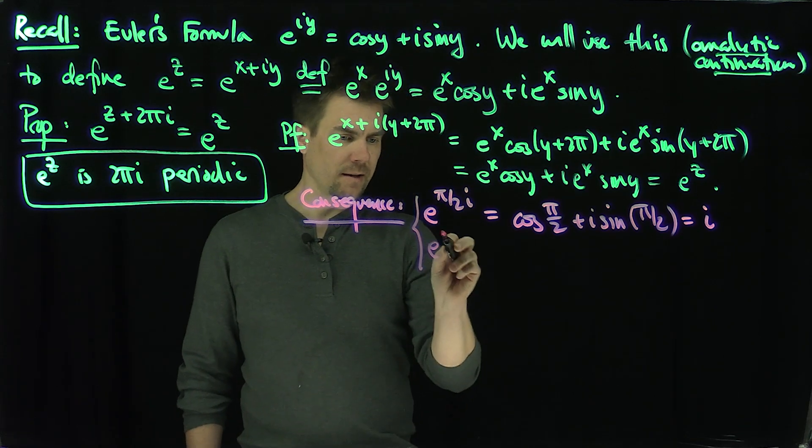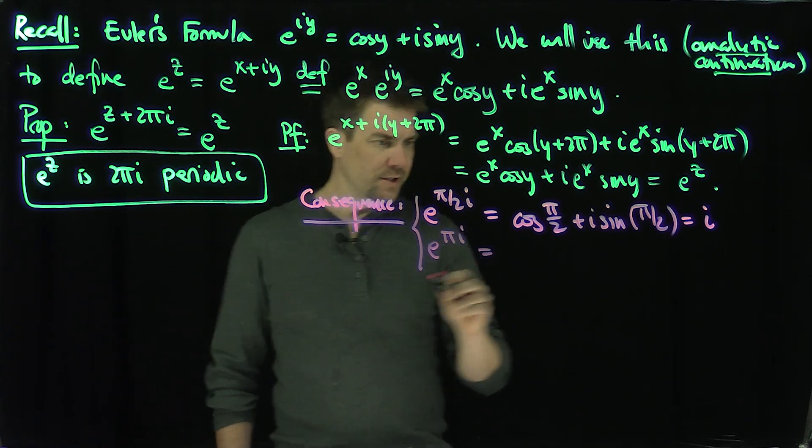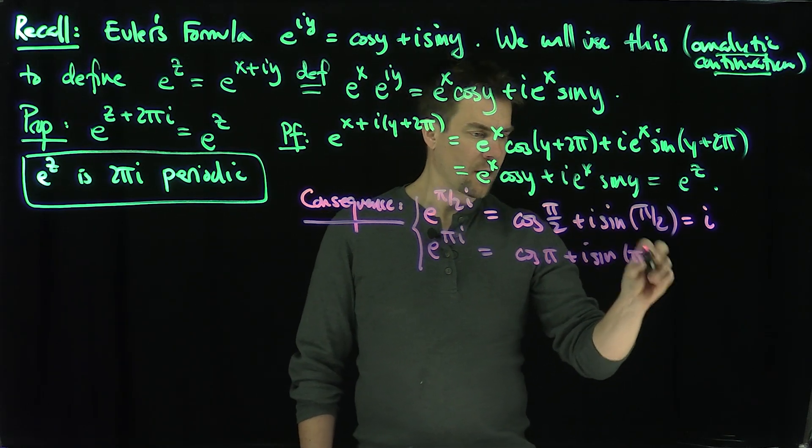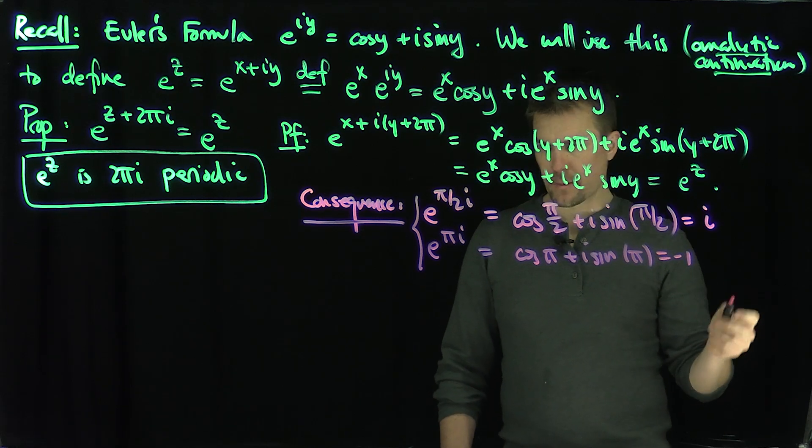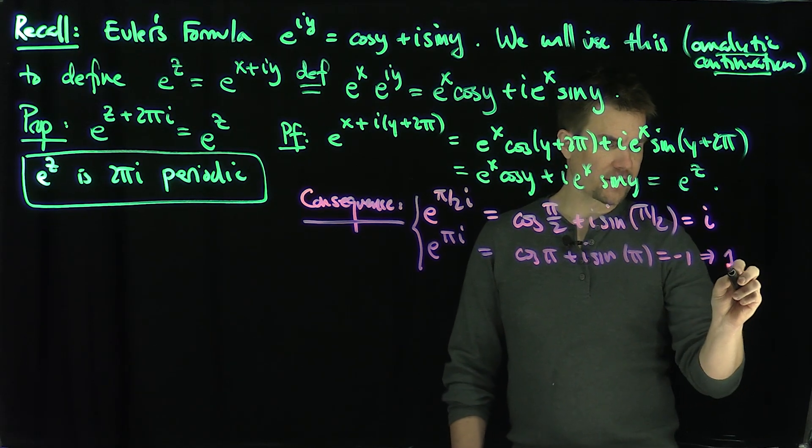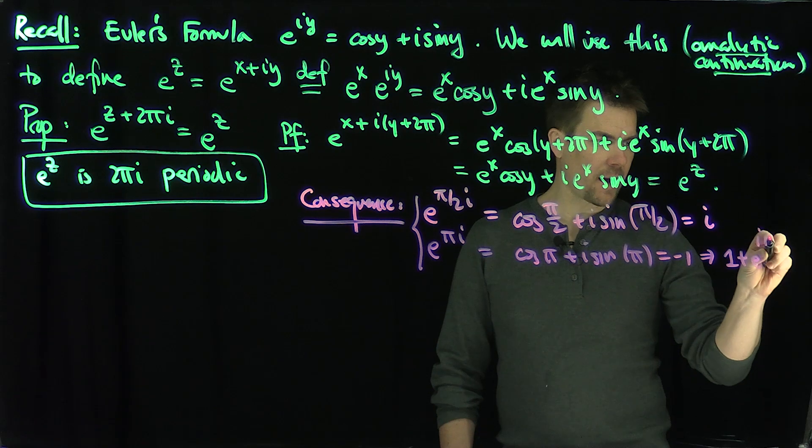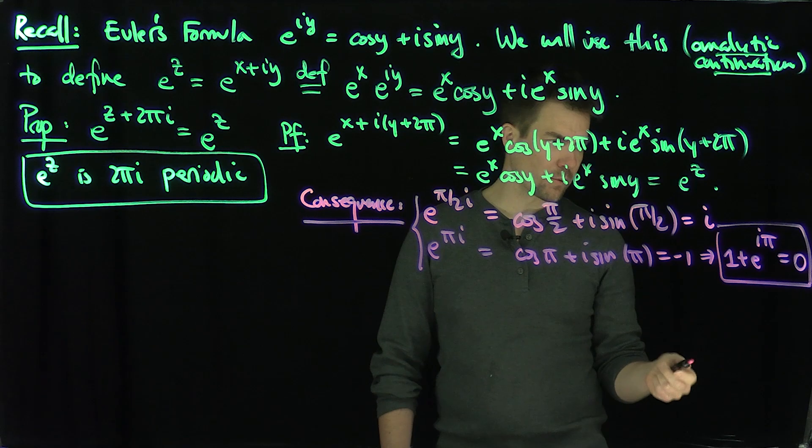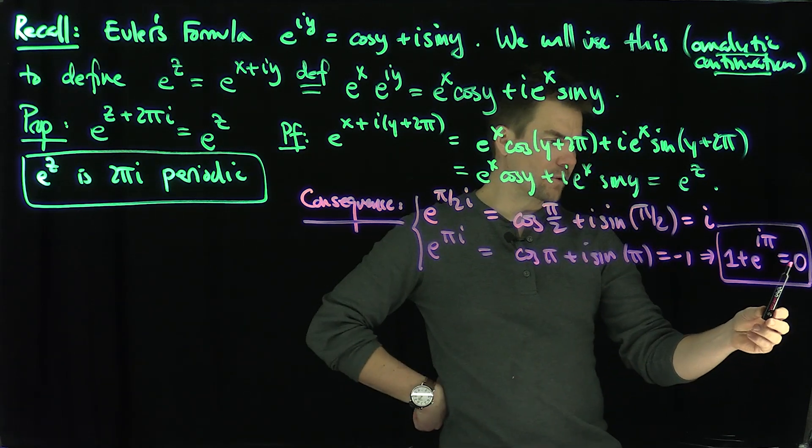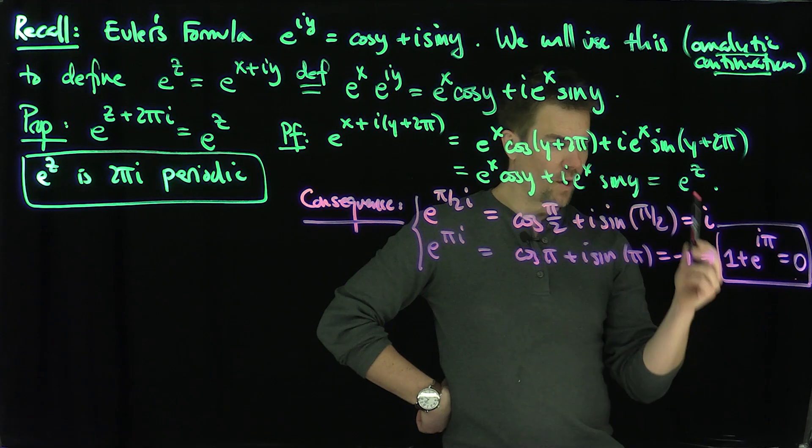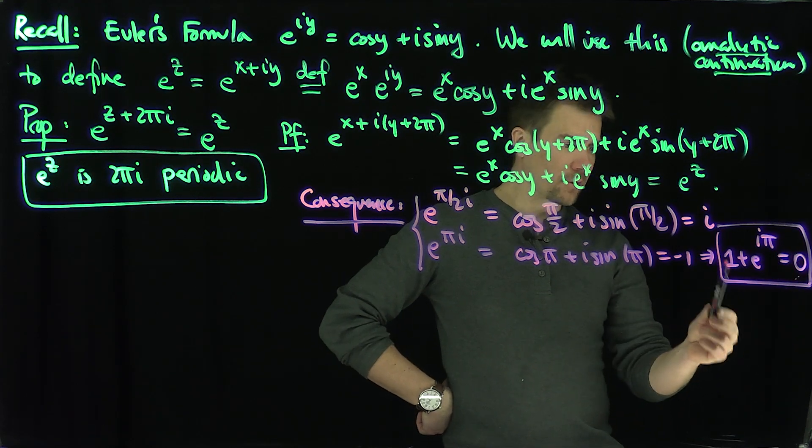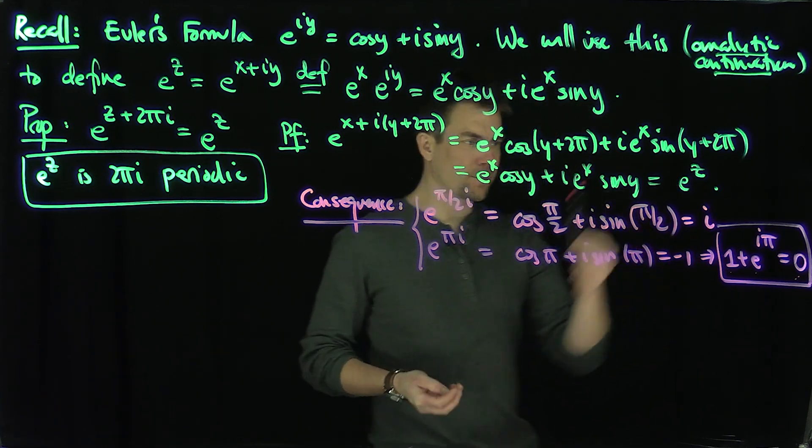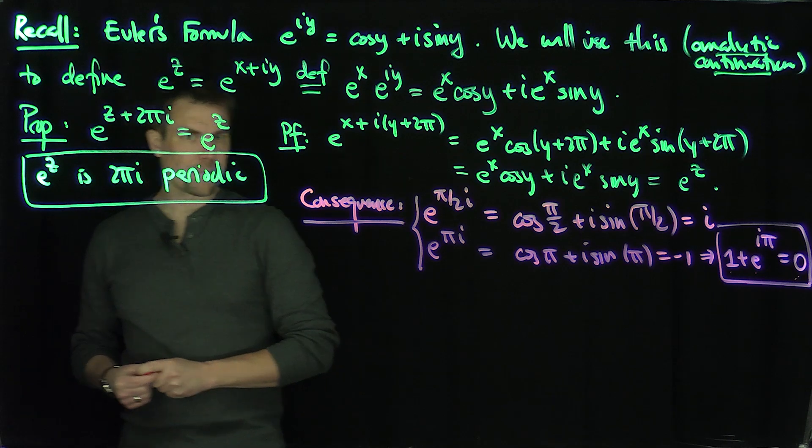If I plug in e^(iπ), this is going to be cosine of π plus i times sine of π, which is just negative 1. That's the more famous coffee cup formula that implies 1 plus e^(iπ) is equal to 0. That's what you see on all sorts of coffee mugs because it relates important mathematical concepts: zero, one, Euler's number e, the imaginary unit i, and π. You get this beautiful formula that relates all five of those concepts.